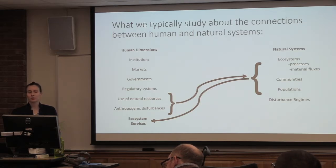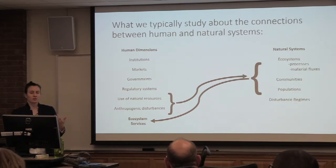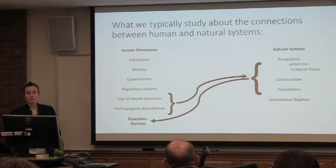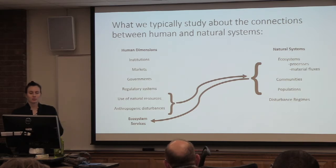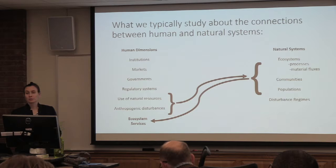So what do we typically study when we look at the connections between human and natural systems? There's a list of human dimensions to consider: institutions such as conservation organizations and government agencies; markets like the real estate market, which can drive development; regulatory systems; and the use of natural resources by humans. In natural systems, we have ecosystems with processes and material fluxes, communities and populations of wildlife and plants, and natural disturbance regimes.